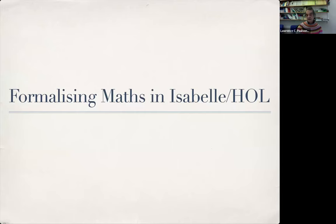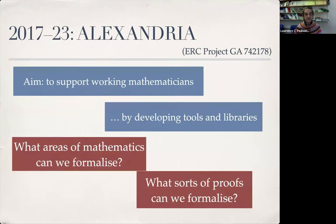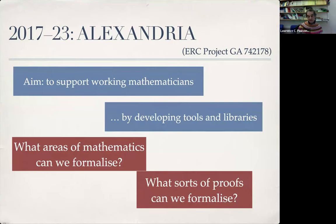Although many of the examples I've given were formalized using Lean, I'm here to tell you about Isabelle/HOL. The European Research Council very kindly gave me money to investigate this. The aim was to support professional mathematicians using the tools we had, and by developing further tools. The key questions were: How far can we go? What areas can we formalize? Are there things that are off limits? What kinds of proofs can we formalize?